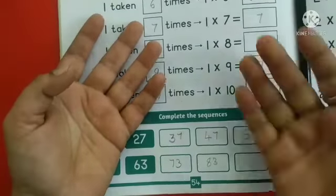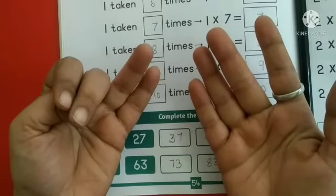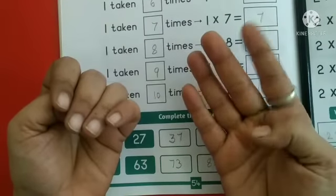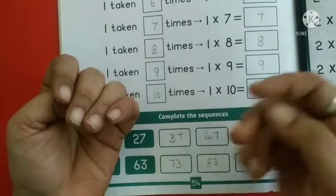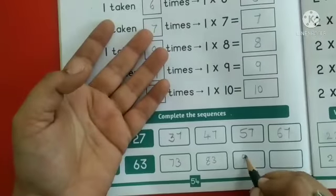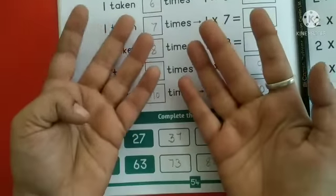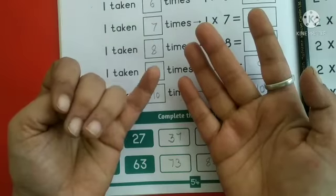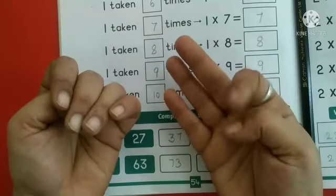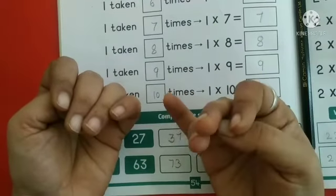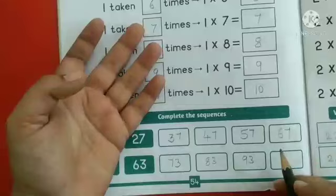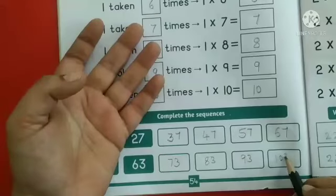Next after 83. 94, 95, 96, 97, 98, 99, 100, 101, 102, 103. Write number 103, 93.